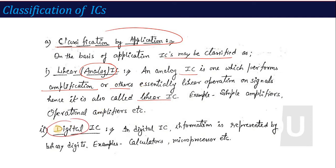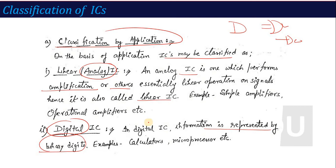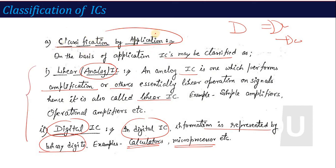For digital IC, when information is represented by binary digits, the particular IC is called a digital IC. Examples include calculators, microprocessors, and logic gates — these are all digital ICs. This completes the classification by application.